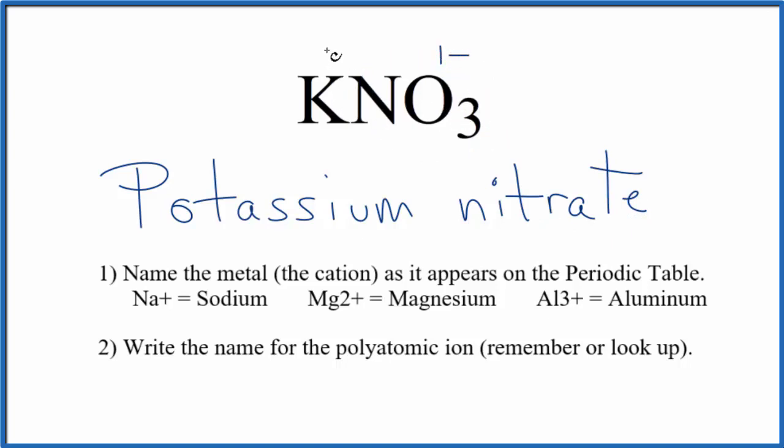Potassium, that's in group one, has a one plus ionic charge. So you only need one potassium atom and one nitrate ion for the charge to balance out. So the formula for potassium nitrate is KNO3.